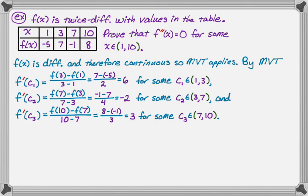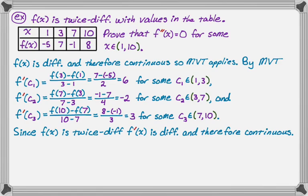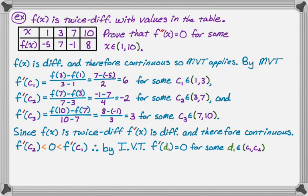Now I've got three points on the derivative. Moving to the next part of the plan: use the intermediate value theorem on f'. To do that, I need f' to be continuous. Since f(x) is twice differentiable, I know that f' is differentiable, and therefore continuous. I'm using the given information but making sure the reader knows I understand what things mean. So f' is continuous — that's the only requirement for the intermediate value theorem. Since f'(c2) equals negative 2, which is less than zero, which is less than f'(c1) equals 6, by the intermediate value theorem, f'(d1) equals zero for some d1 between c1 and c2.